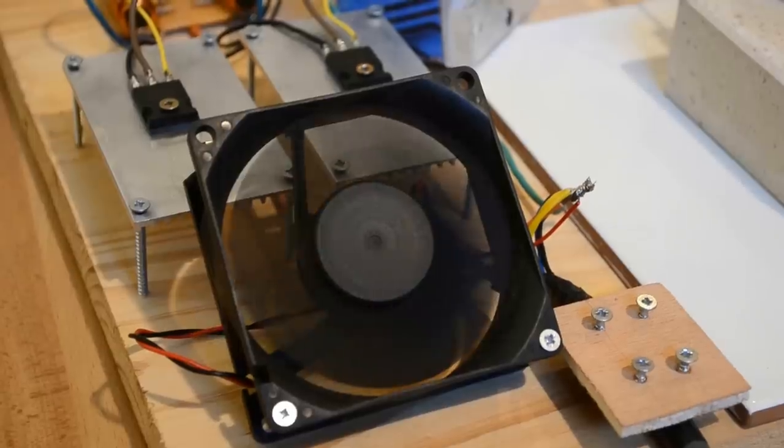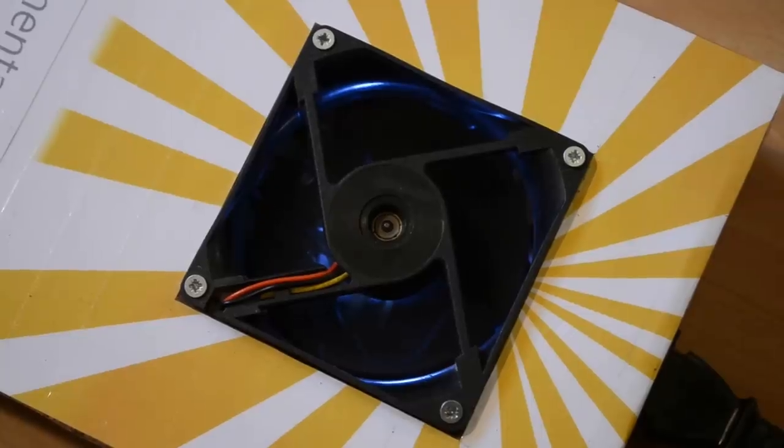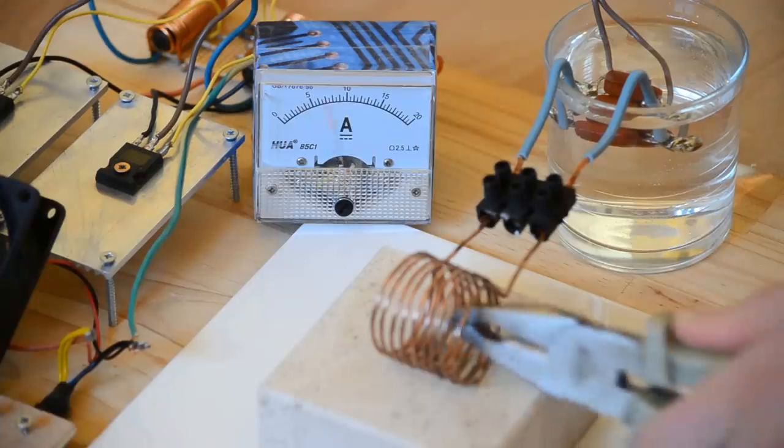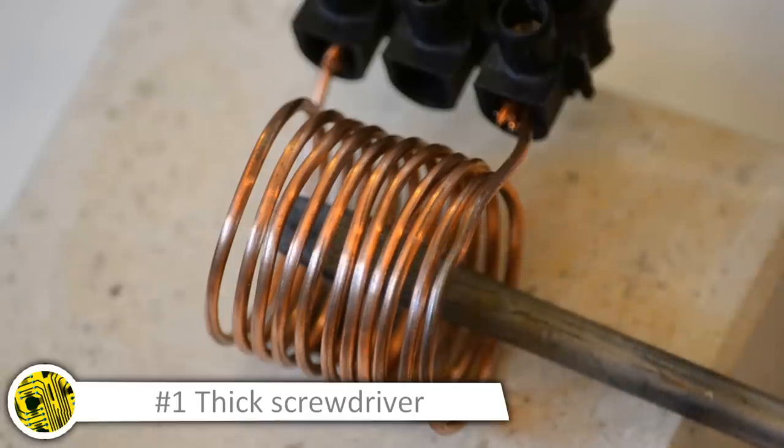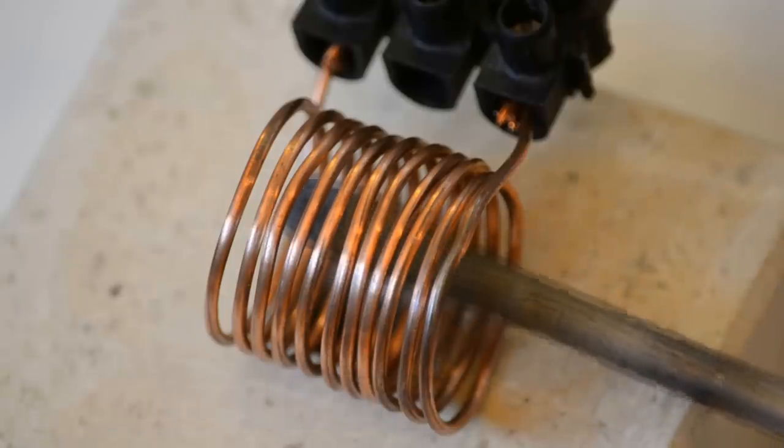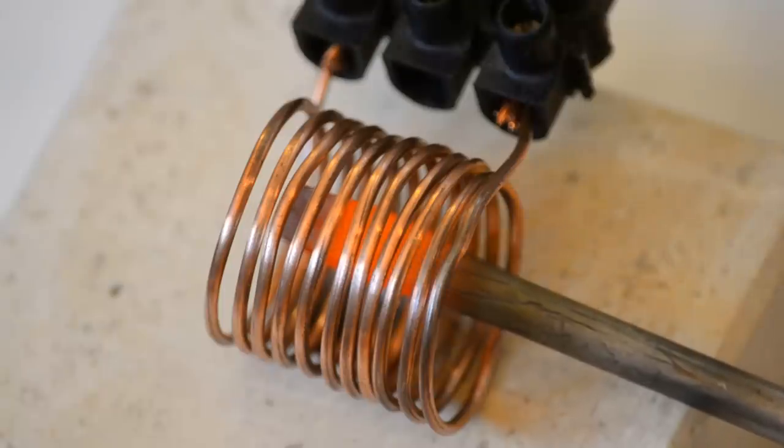We test our machine. We notice that the consumed current increases immediately when we introduce metal in the coil. All this extra power is transformed into heat. First test, heat a big screwdriver. There it is. In only a few seconds, it becomes red hot.